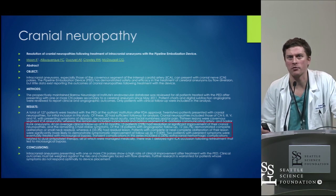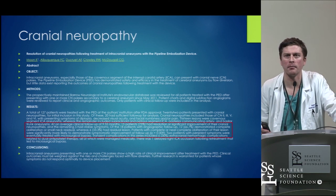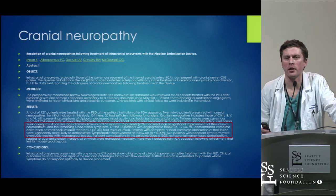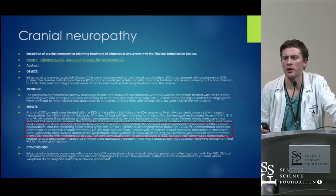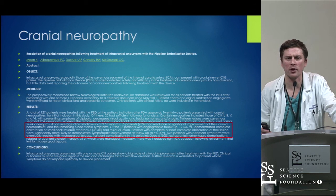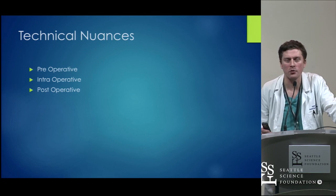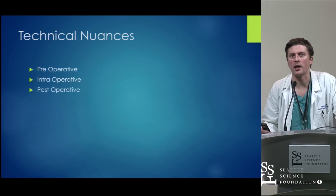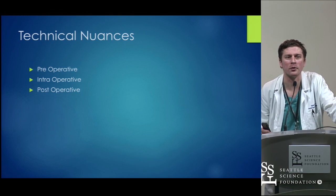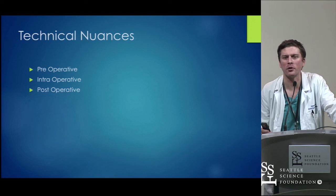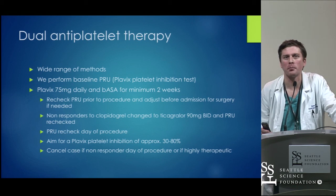Cranial neuropathy — from Dr. McDougall's group at the Barrow — shows a very acceptable rate of improvement of cranial neuropathy. Improvement is significantly more likely if you achieve aneurysm occlusion, and that's certainly what I've seen clinically. Just to go through some technical nuances — how I do it is how Pascal taught me, so it's one of those things you learn from your mentors.